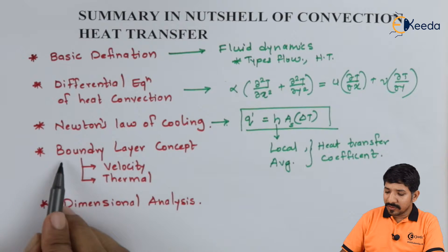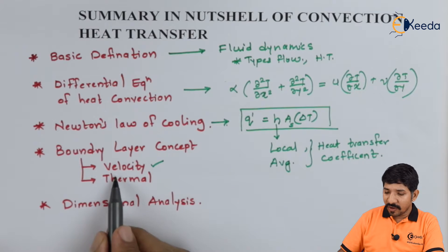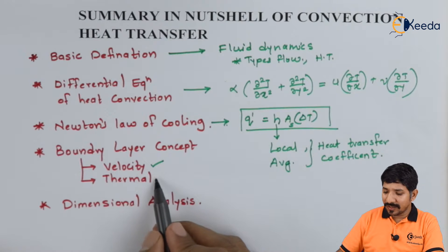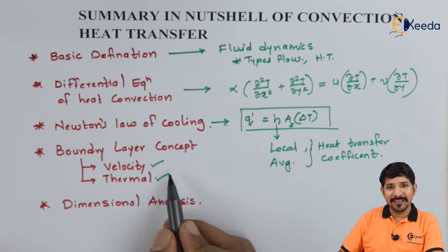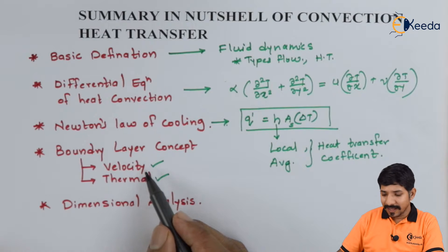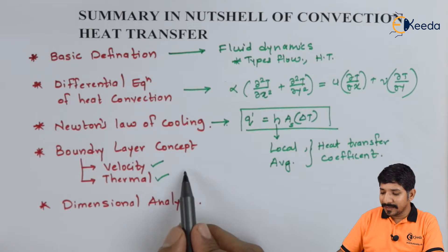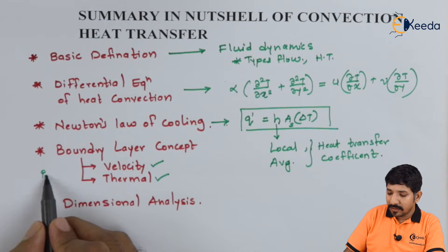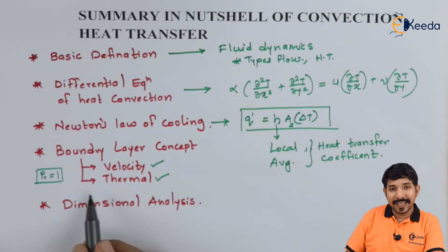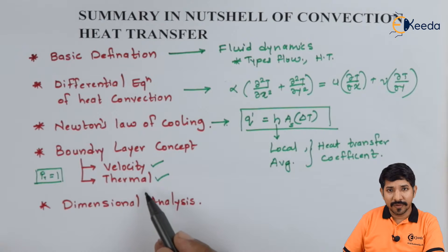Then we talked about the boundary layer concept. We were previously aware of the velocity boundary layer, and then we discussed the thermal boundary layer and the relationship between them. We found that if the Prandtl number is 1, the velocity boundary layer coincides with the thermal boundary layer.